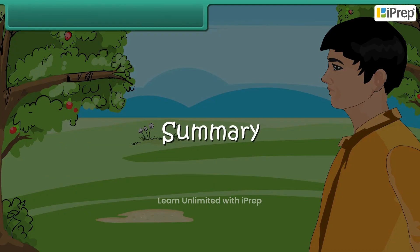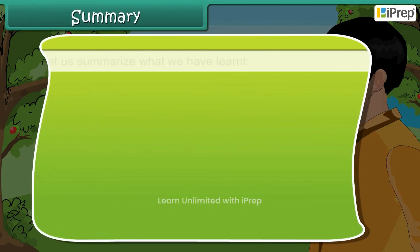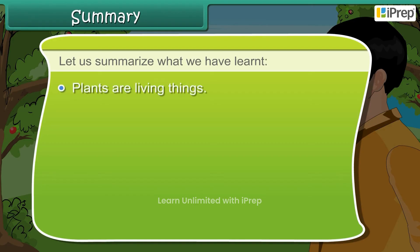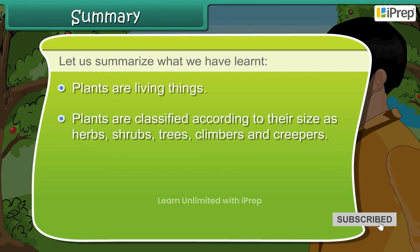Let us summarize what we have learned. Plants are living things. Plants are classified according to their size as herbs, shrubs, trees, climbers, and creepers.